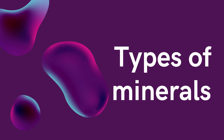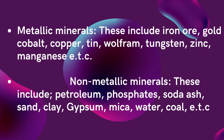Let's look at types of minerals. What major types of minerals do you know? We want to look at two: number one, metallic minerals. These include iron ore, gold, cobalt, copper, tin, wolfram, tungsten, zinc, and magnesium — these are metallic in nature. Then we have non-metallic minerals. These include petroleum, phosphate, soda ash, sand, clay, gypsum, mica, and coal. So under types of minerals we have metallic and non-metallic minerals.